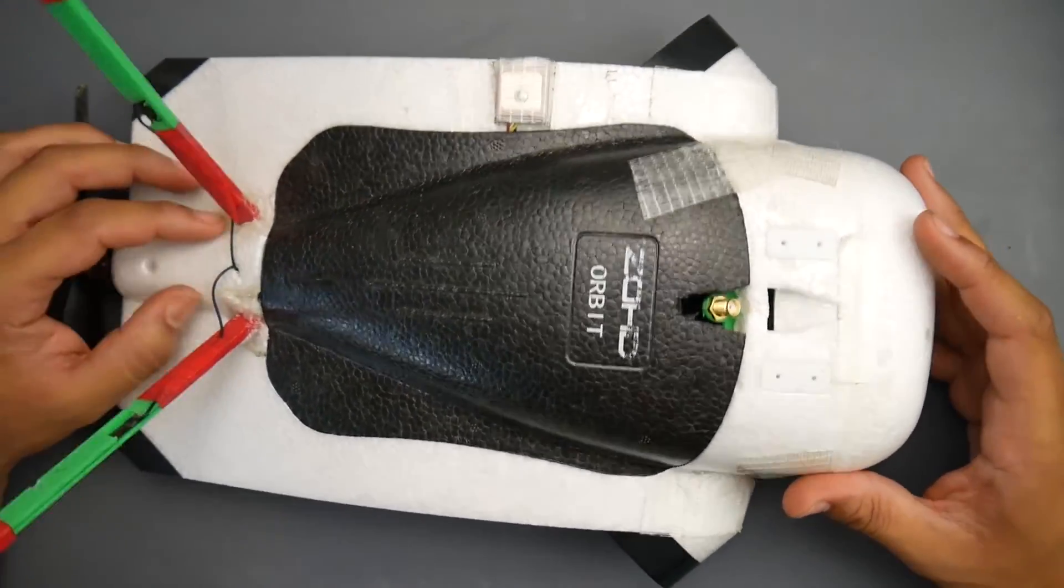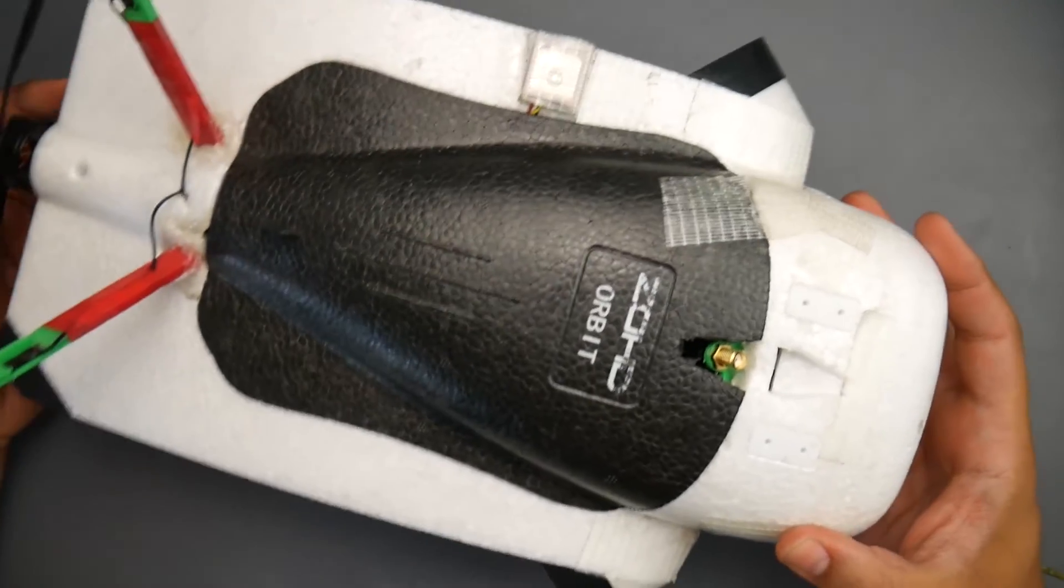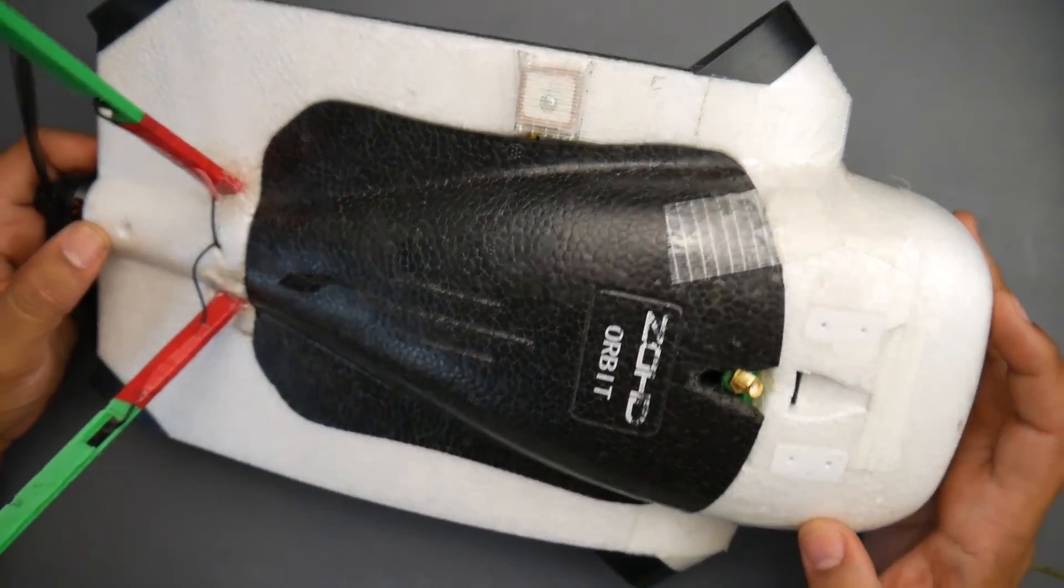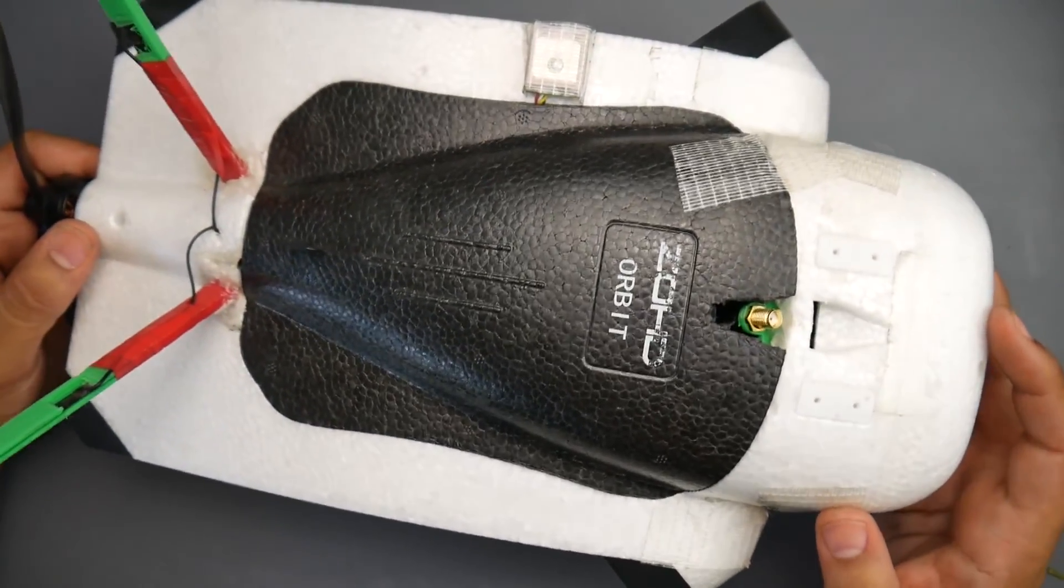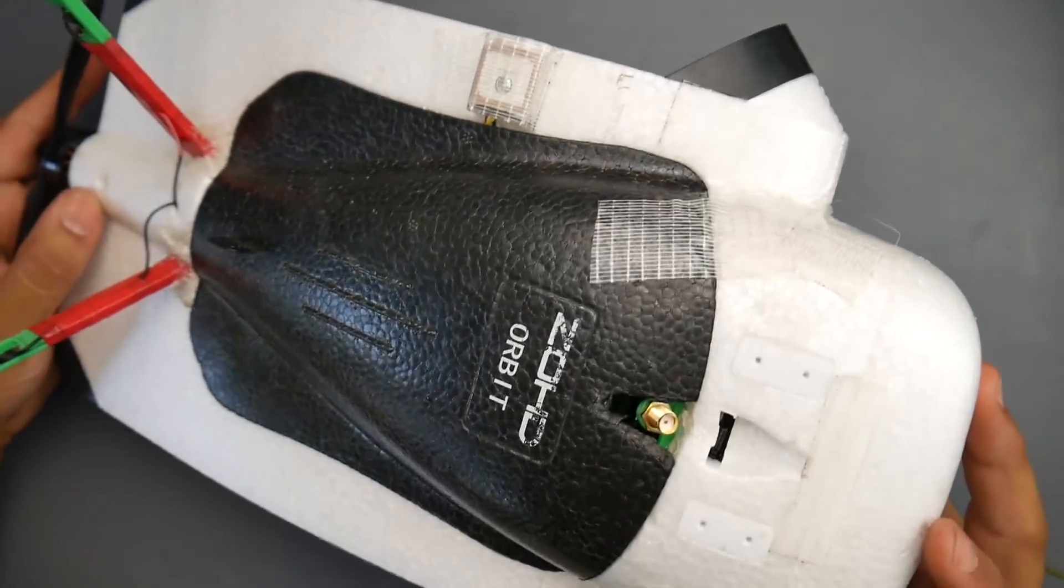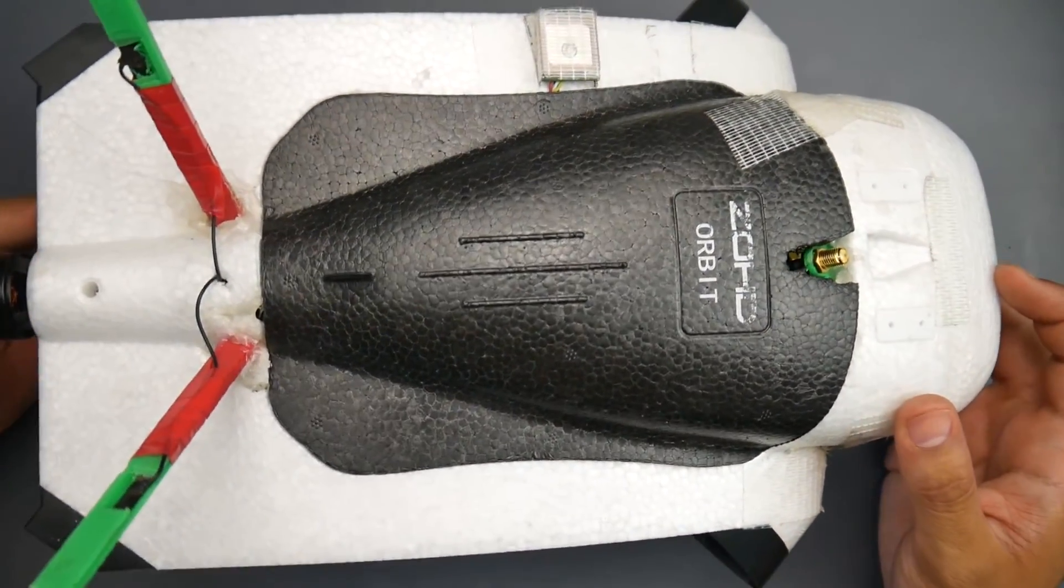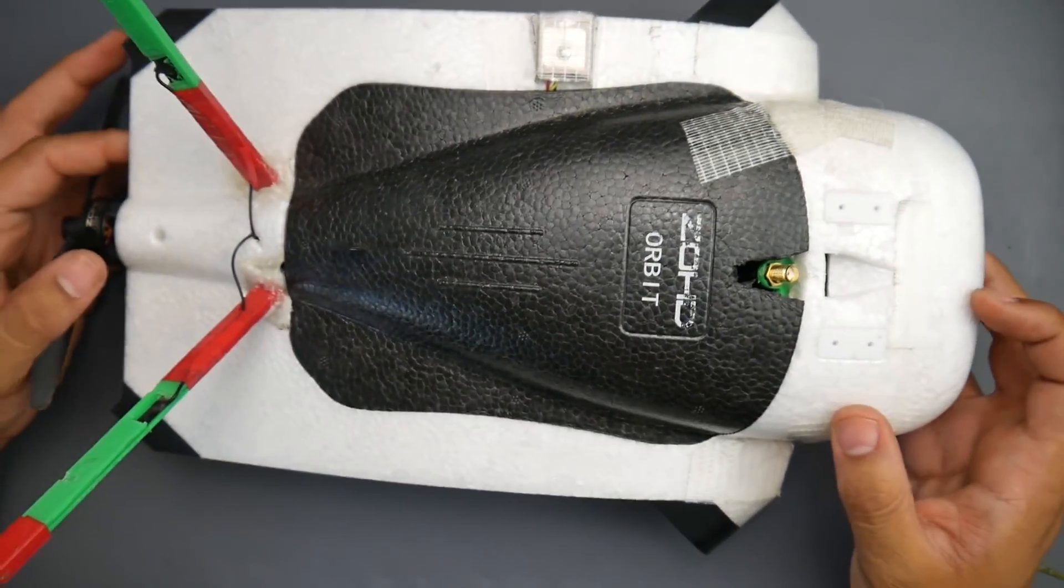So if you are looking for a long-range FPV wing or one to practice on, I do highly recommend you get the Zod Orbit and I'll have everything I have on this linked down below. Well that's it guys, I just wanted to create this update video. I really hope you guys enjoyed it and everything's linked down below. Let me know what you think and I'll see you in the next one. Peace out guys.